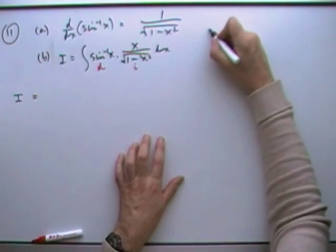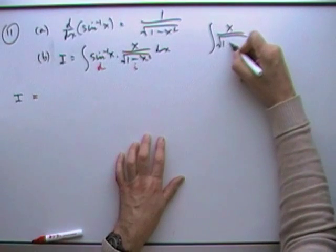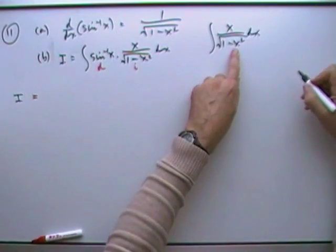Now I'm just going to work this out separately at the side, I think. I want the integral of x over 1 minus x squared dx. Well, that's an obvious case for a substitution.